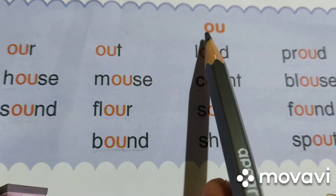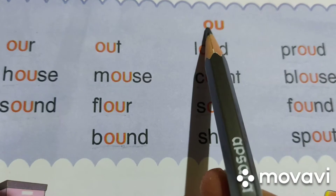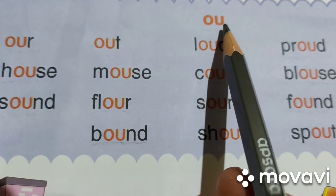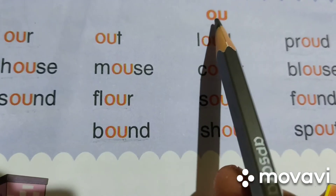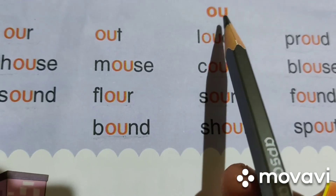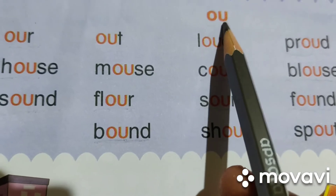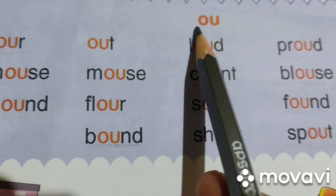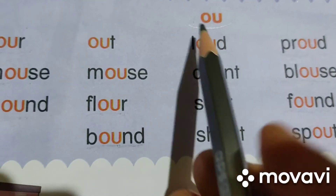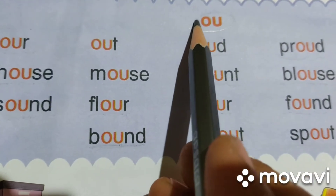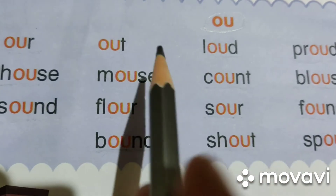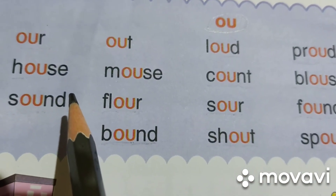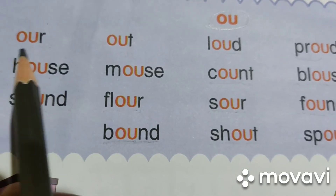OU. What is the sound of letter O? O says A and U says A. But whenever you see the letters OU together, it makes the sound O. Say with me: O. Very good. Now let's read the words with the OU sound.